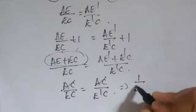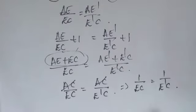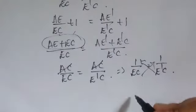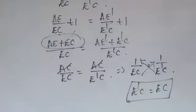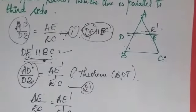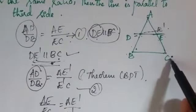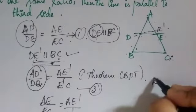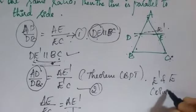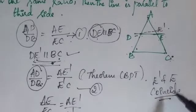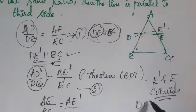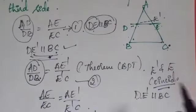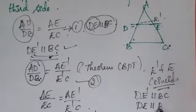Since AC cancels from both sides, we get 1/EC = 1/E'C, which on cross-multiplying gives E'C = EC. This means E' and E are the same point — they coincide. Since DE' is parallel to BC and E' coincides with E, we conclude that DE is parallel to BC.